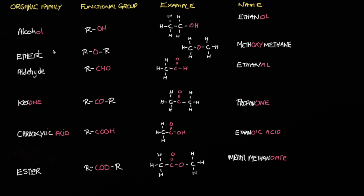Let's begin with alcohols. Alcohols have an ending O-L. Their functional group is OH, which is attached to an R group. I like to think of an R group as the rest of the molecule. In our example here we've got our OH attached to a two-carbon ethyl group, and this happens to be called ethanol. So if it ends with an O-L, you're most likely looking at an alcohol — the ending will tell you the family to which it belongs.